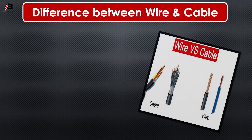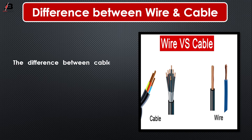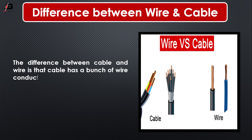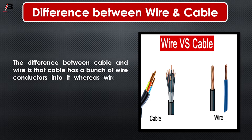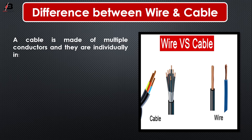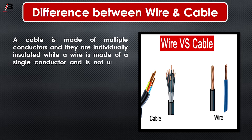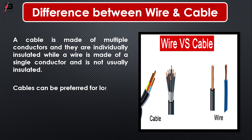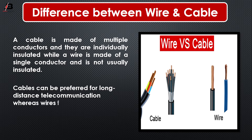Difference between Wire and Cable. The difference between Cable and Wire is that Cable has a bundle of wire conductors in it, whereas Wire on the other hand has a single conductor. A Cable is made of multiple conductors and they are individually insulated, while a Wire is made of a single conductor and is not usually insulated. Cable can be preferred for long distance telecommunications whereas Wire is for short distance.